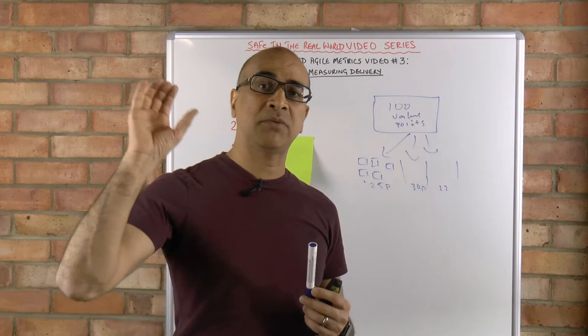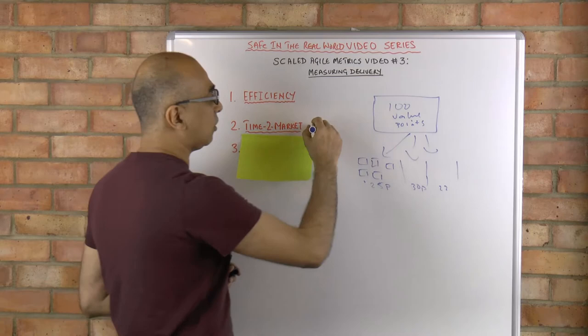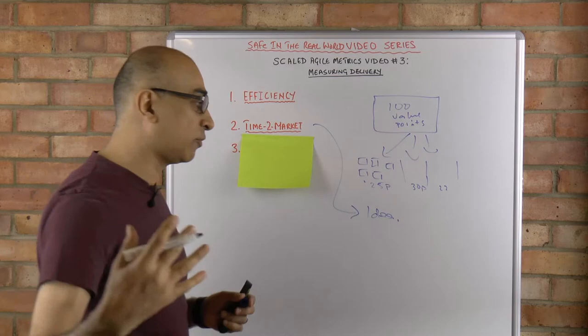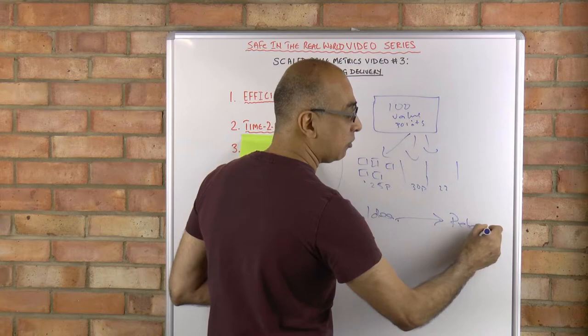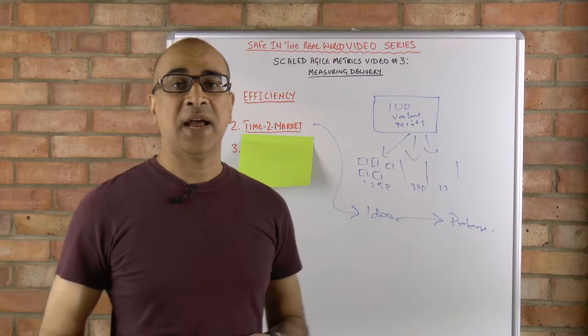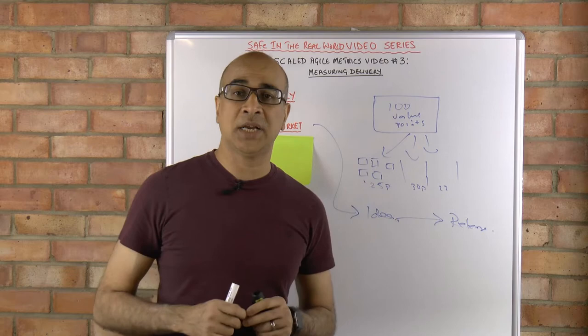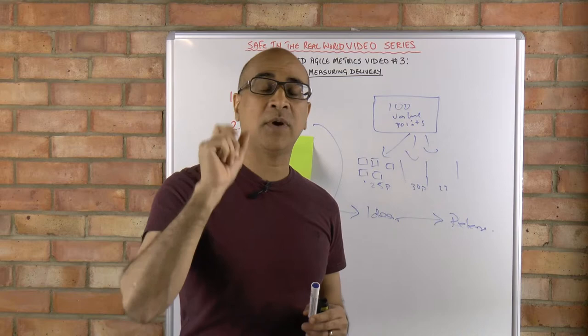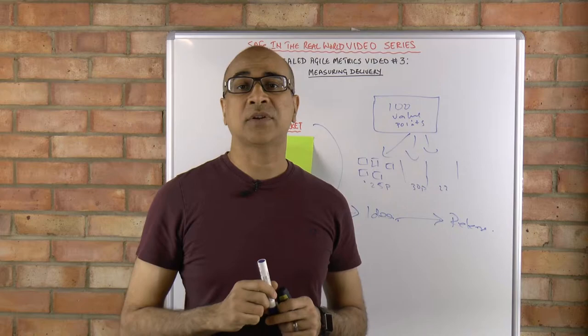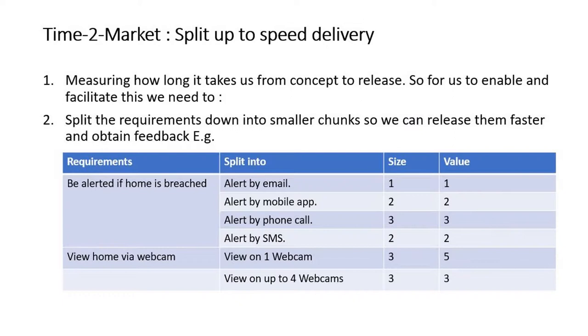We may look and see from our idea - whether that's coming from the customer or from ourselves - to actually releasing that into the market: what is that duration, what is that period of time? That's a very valuable way of determining how well we're actually doing. When we're trying to release more frequently to the market, one of the key ways to do that is to actually split up our requirements into smaller chunks, as you can see on screen with the home security system example.